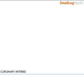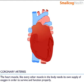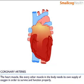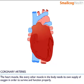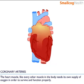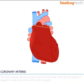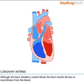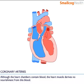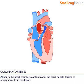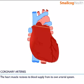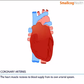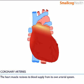The coronary heart arteries. The heart muscle, like every other muscle in the body, needs its own supply of oxygen in order to survive and function properly. Although the heart chambers contain blood, the heart muscle derives no nourishment from this blood. The heart muscle receives its blood supply from its own arterial system.